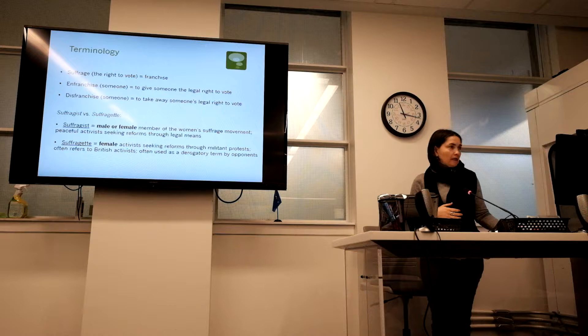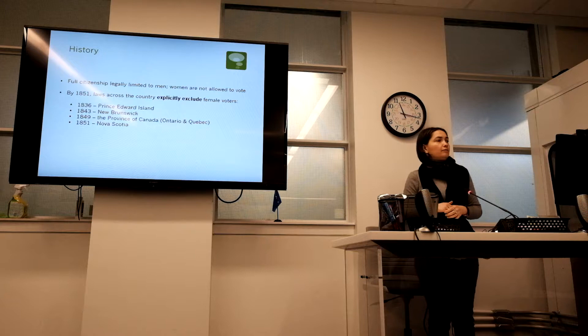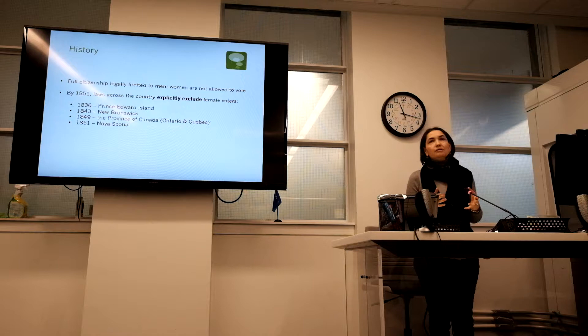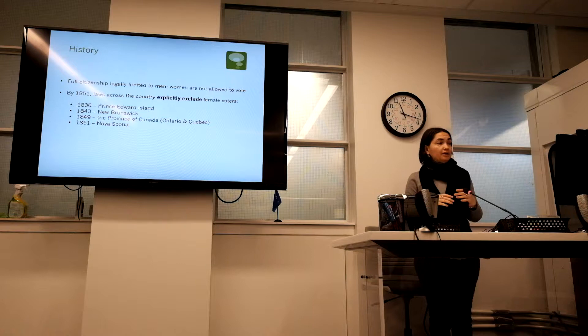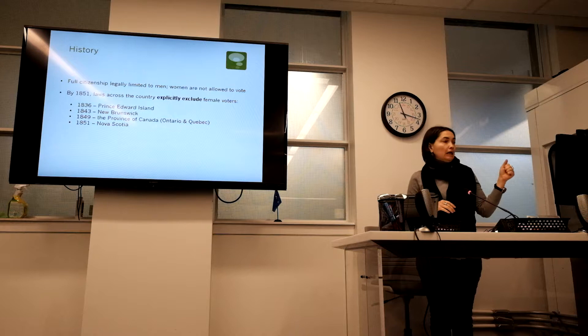Now a little bit of history. Full citizenship was legally limited to men — women were not allowed to vote. By 1851, laws across the country, which was not even Canada at the time, explicitly excluded female voters. Different regions had laws excluding women: Prince Edward Island in 1836, New Brunswick in 1843, the province of Canada — meaning Ontario and Quebec — in 1849, and Nova Scotia in 1851. This was all before Confederation. Those regions had explicit laws preventing women from participating in political elections.